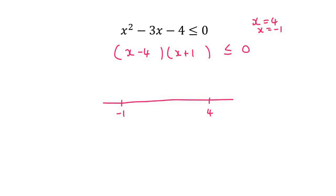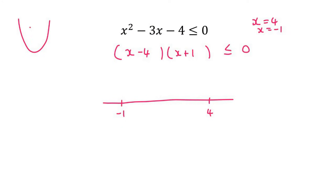Then you look at this graph, and you should know from grade 10 that it is a parabola. Remember, a parabola can be a smiley face or it can be a sad face. The way to know is to look at the number in front of the x squared. If it's positive, then it's happy — smiling.